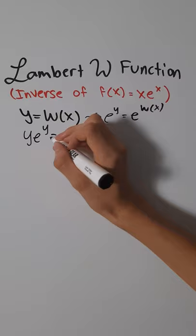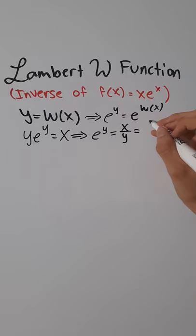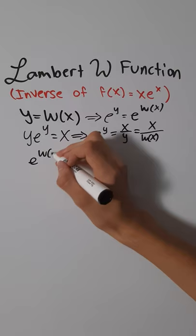So that tells us that e to the y is going to be x divided by y. If we solve that equation, which is just x over w of x, that's telling us that e to the w of x equals x over w of x.